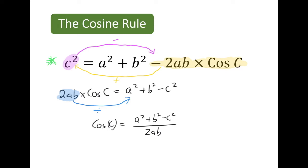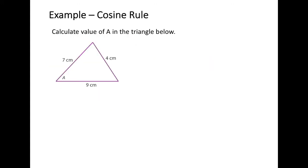Let's look at an example of how we can apply the cosine rule to find missing information in a triangle. In this example, we want to find the value of angle a. We know the three sides of the triangle, so we can use the cosine rule. The first step is to write down the standard cosine rule from the formula sheet: c squared equals a squared plus b squared minus 2a times b times cos of angle c.